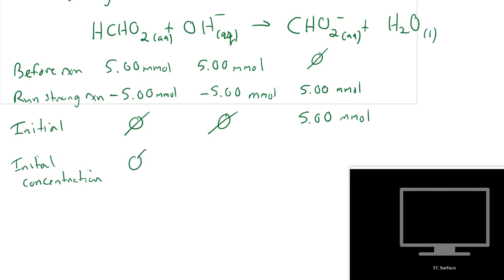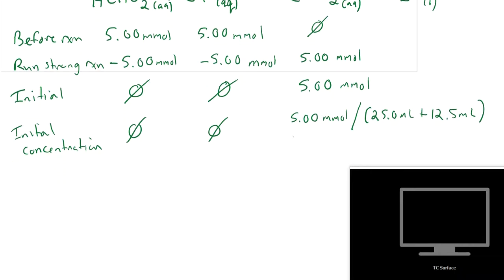And well, we've got zero on here, zero on here. And this one's going to be 5.00 millimoles divided by my total volume. So that's going to be 25 milliliters that I started with and the 12.5 milliliters that I got from adding the sodium hydroxide. And so you end up with 0.133 molar of the formate ion.